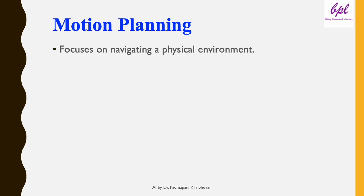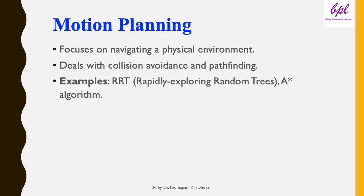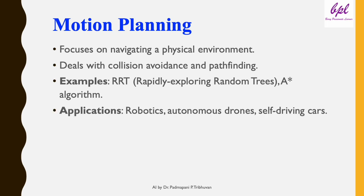Motion planning focuses on navigating a physical environment. It deals with collision avoidance and pathfinding. Examples include RRT (Rapidly-exploring Random Trees) and the A* algorithm. Motion planning is used in robotics, autonomous drones, and self-driving cars.